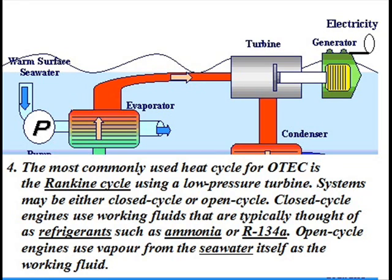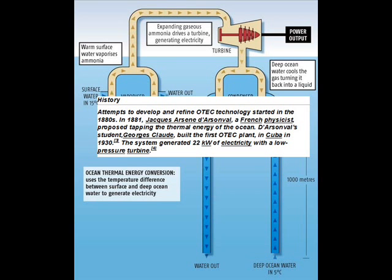Attempts to develop and refine OTEC technology started in the 1880s. In 1881, Arsène d'Arsonval, a French physicist, proposed harnessing the thermal energy of the ocean. His student Georges Claude built the first OTEC plant in Cuba in the 1930s. The system generated 22 kW of electricity with a low-pressure turbine.